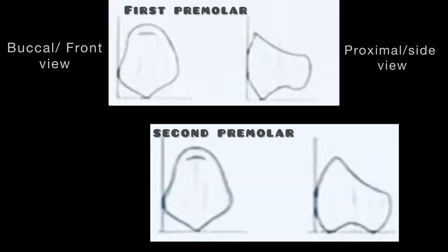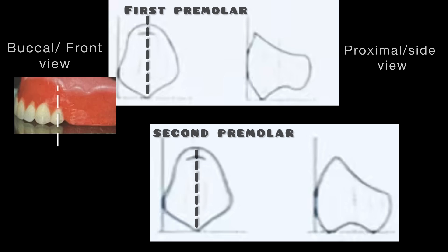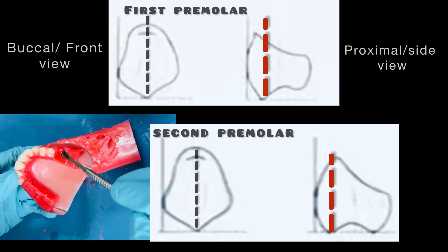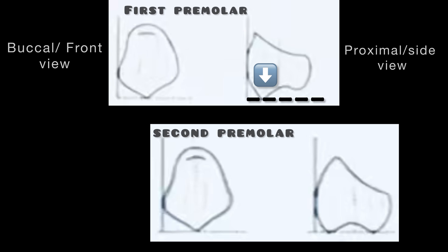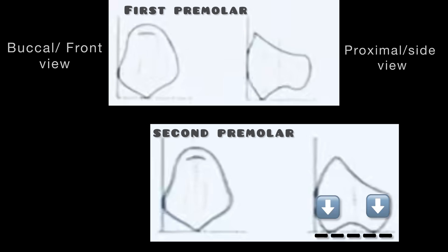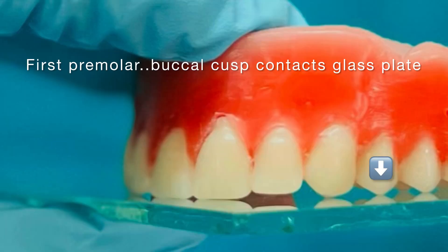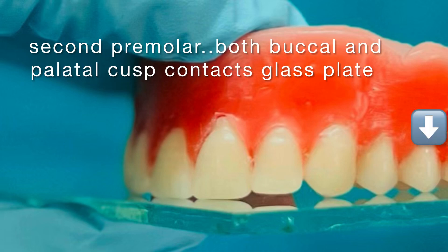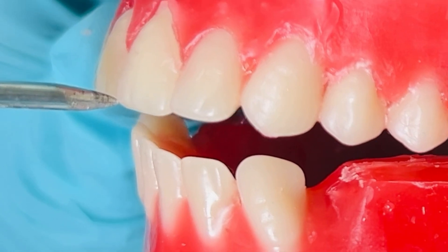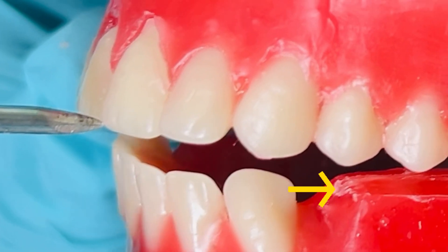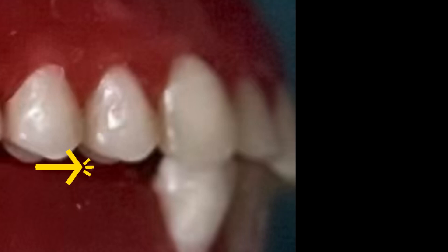Let's see the guidelines for arranging maxillary first and second premolars. Both maxillary first and second premolars are set in such a way that the long axis of these teeth are straight when viewed from the front as well as the side. But do note the difference in occlusal plane or glass plate relation. Only the buccal cusp of the maxillary first premolar touches the glass plate, whereas both the buccal as well as palatal cusp of the second premolar are in contact with the glass plate. Gently close the articulator and make sure that the palatal cusp of the premolar coincides with the reference lines drawn on the lower occlusal rim. This will ensure that we are setting the teeth on the center of the ridge.